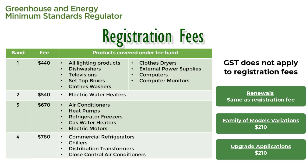First, let's look at the registration fees that apply for each product. Each product regulated under the GEMS Act in Australia has a particular registration fee according to the fee band that it falls into. These are shown on your screen now. Please note that GST does not apply to registration fees. Renewals of registrations incur the same fee as the initial registration fee. For family of models variations or upgrade registrations, there is a fee of $210.